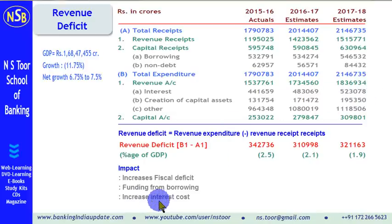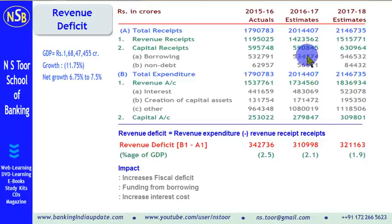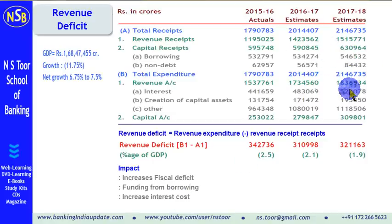The third impact is it increases interest cost. When money is borrowed further, interest increases further. So revenue deficit leads to an increase in interest payments by the government.